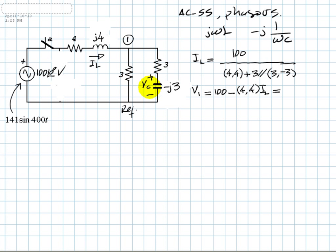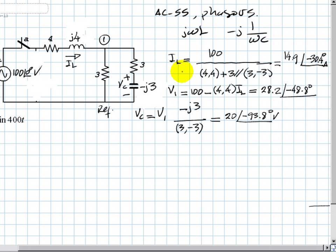And then Vc can be obtained by a voltage divider. Vc is going to be V1, whatever I compute up here, multiplied by negative j3, divided by the total impedance of the branch 3 minus j3. That is this voltage. And once I have them as phasors, I can write them as functions of time. The values of that current and that voltage in the capacitor, the current in the inductor is 14.9A with this phase, and the voltage in the capacitor is 20V with this phase.